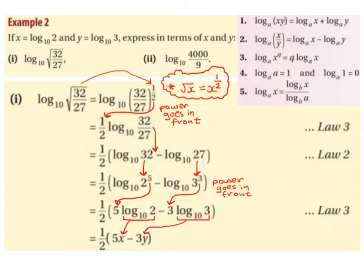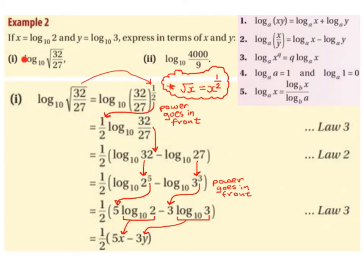Now we have log base 10 of 2 and log base 10 of 3. Going back to the question, x equals log base 10 of 2 and y equals log base 10 of 3. So we swap log base 10 of 2 for x and log base 10 of 3 for y. We still have a half multiplied by 5x minus 3y. So log base 10 of root(32/27) expressed in terms of x and y equals half(5x − 3y).